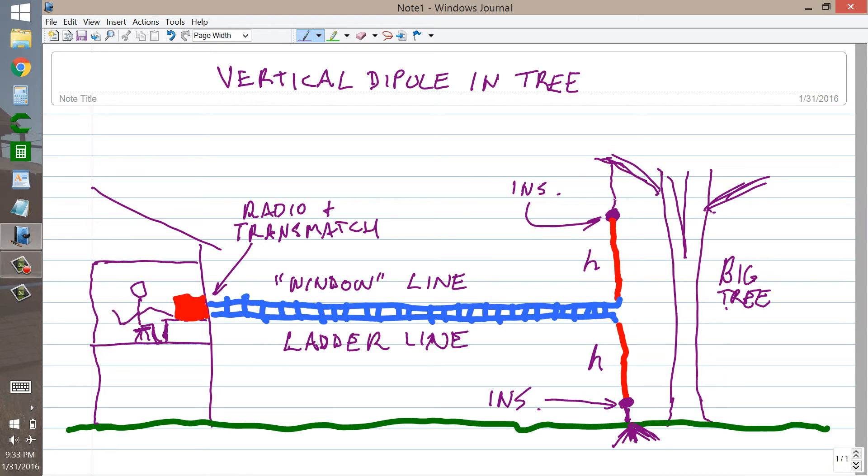You may want to put a spring here and here, if this tree is prone to sway in the wind, or if you live in a zone where winds get high quite often. This is just basically the geometrical arrangement, you need a transmatch, I recommend those true balanced antenna transmatch tuners made by a company called PALSTAR.